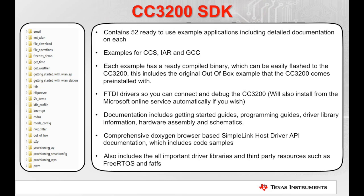The CC3200 SDK is the main resource for development. It contains 52 ready-to-use example applications, including detailed documentation on each example. You can see some examples on the graphic to the left. You can use these examples with Code Composer Studio, IAR, or GCC. Each example has a ready-to-use binary, so you can easily flash your launchpad to see how it works.